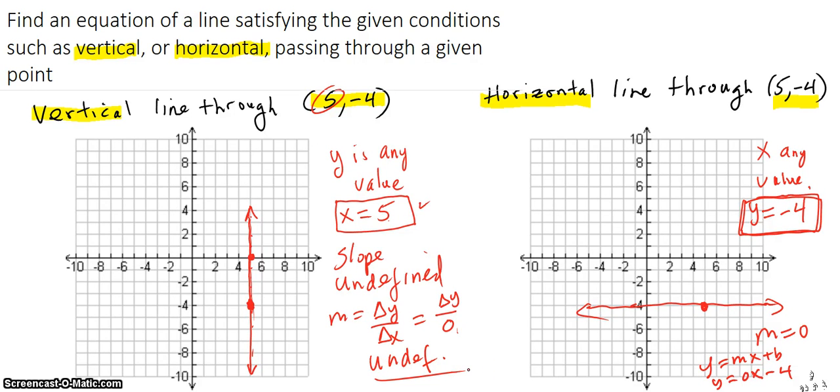you're just going to call it undefined slope. So this one has 0 slope for horizontal, and undefined slope is vertical.